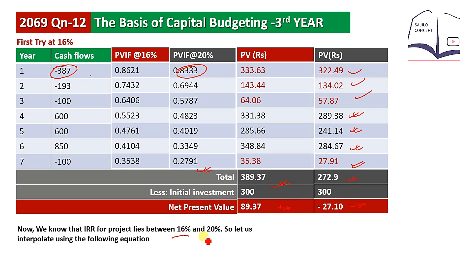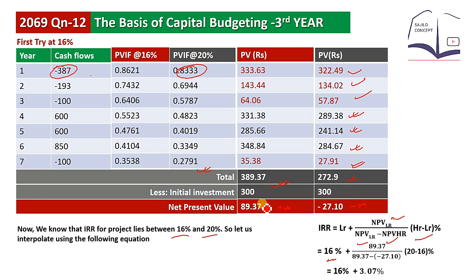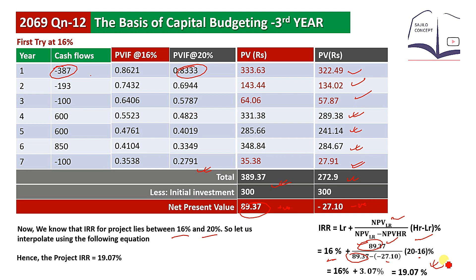Now we apply the interpolation formula: IRR = lower rate + [NPV at lower rate / (NPV at lower rate minus NPV at higher rate)] × (higher rate − lower rate). With lower rate = 16%, NPV at lower rate = 89.39, NPV at higher rate = −(negative value), the IRR for Project A comes out to approximately 19.07%.